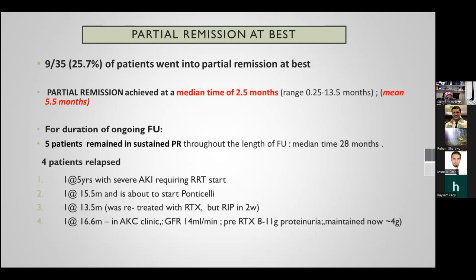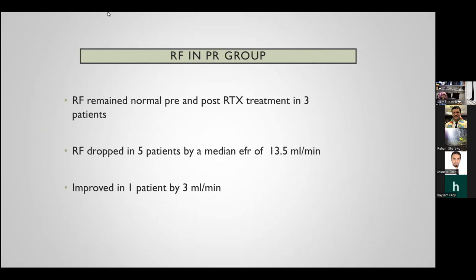Nine courses achieved partial remission, with a median time of 5.5 months — much quicker than complete remission. Five of the nine patients remained in sustained partial remission; four experienced relapses. One patient who relapsed developed severe AKI and required renal replacement therapy. Another patient subsequently received Ponticelli. Patients in partial remission had worse renal function outcomes compared to those who achieved complete remission.